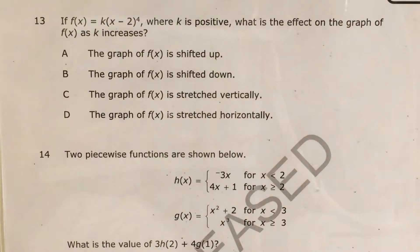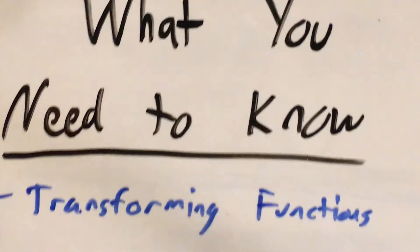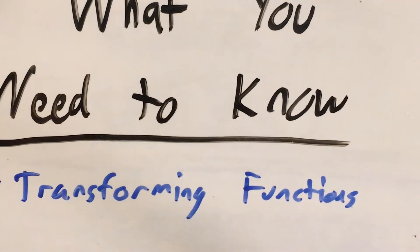The question is asking us to describe the effect on the graph of this function, k times x minus 2 to the 4th, where k is positive as k increases. And the big skill that this question is testing is transforming functions.